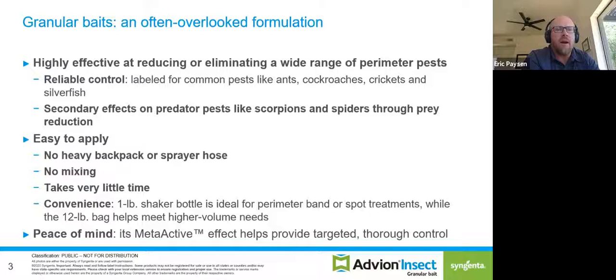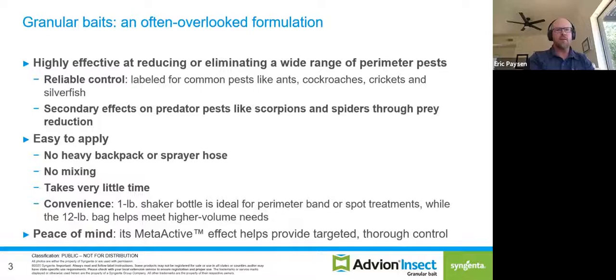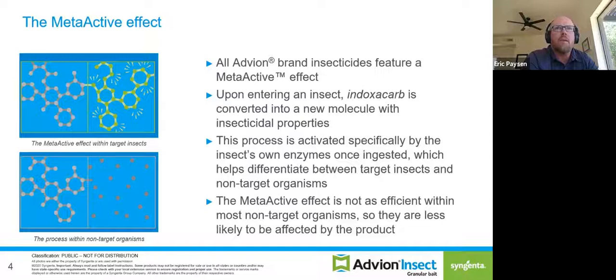The other really beneficial thing about the entire Advion brand is the meta-active effect that's present in the active ingredient. The meta-active effect is built into the entire Advion brand. Indoxacarb itself, in the form when it's in the package, actually has very low toxicity. That indoxacarb molecule is actually activated — cleaved or broken down — by enzymes that are specifically within the insect's digestive system. These products have to get inside of a target pest before the manufacturing process is really complete.